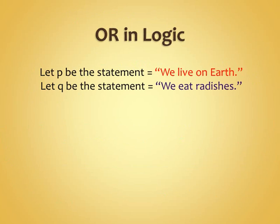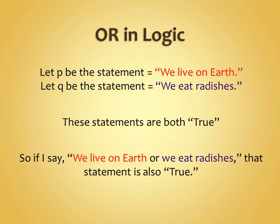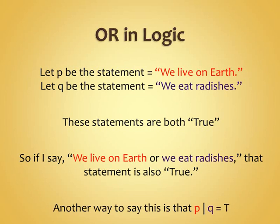So if we say 'we live on Earth' and 'we eat radishes' — both of these statements are true. If I say 'we live on Earth OR we eat radishes,' in logic what I'm saying is we live on Earth, or we eat radishes, or both. It's really not a big deal — we would say that true OR true is true.